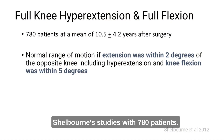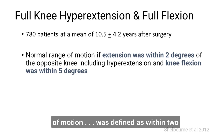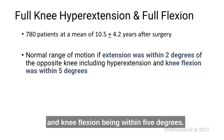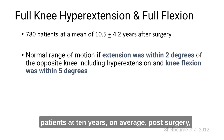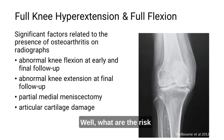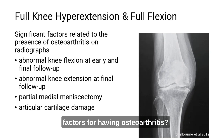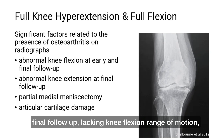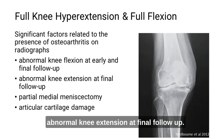Let's look at one of Shelbourne's studies with 780 patients. Normal range of motion was defined as within two degrees of the opposite knee including hyperextension, and knee flexion being within five degrees. With that definition, looking at 780 patients at an average of 10 years post-surgery, what is our rate of osteoarthritis? The risk factors for having osteoarthritis were: abnormal knee flexion at early and final follow-up, lacking knee flexion range of motion, and abnormal knee extension at final follow-up — defined as lacking two degrees including hyperextension.